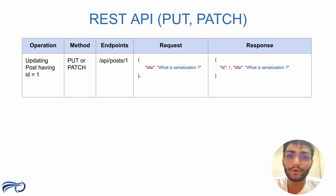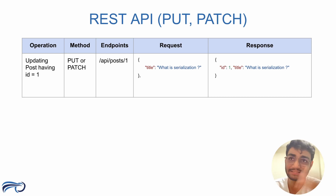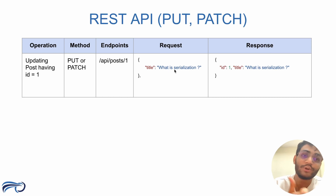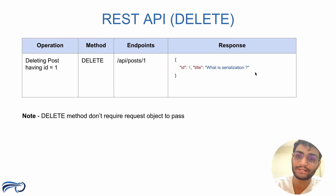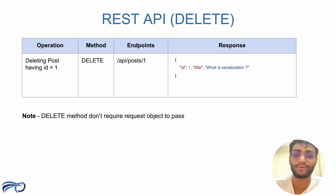Now if you want to update data, you pass the endpoint '/api/posts/1' along with the data you want to update in the request body. For example, passing a title 'What is Serialization' in the request body will update the record with ID 1 to that new title. For deleting data, you pass the endpoint '/api/posts/1' using the DELETE method. For DELETE, you do not need to pass any request body.